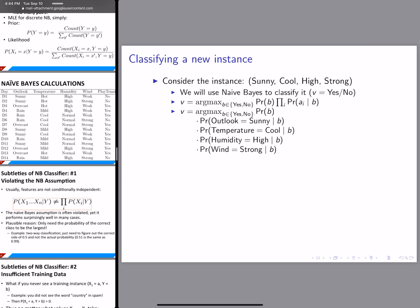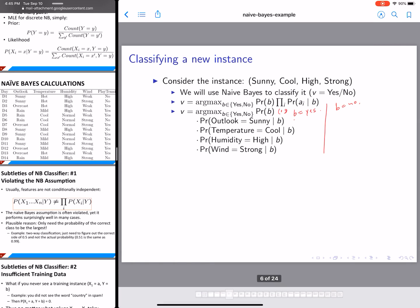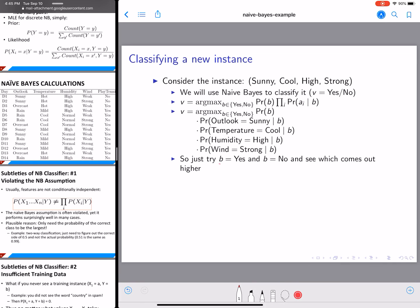We calculate the different components. The first is probability of b. We calculate probability of yes separately and probability of no separately. First we consider b equal to yes and do all calculations, then repeat for b equal to no. Whichever value is higher will be chosen as the prediction.